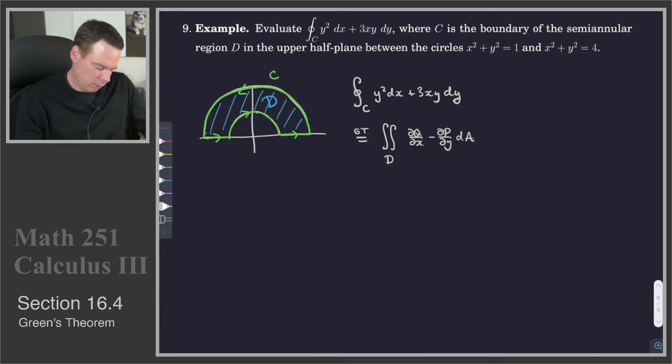And we'll need to collect together a few things. So first of all, we'll note that y squared, that's our P function, 3xy, that's our Q function. What else do we need to know?